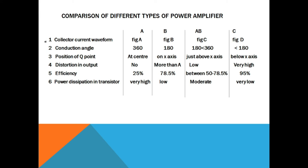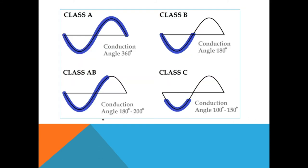The first parameter is the collector current waveform. In case of class A power amplifier, the conduction angle is 360 degrees — the Q-point is adjusted at the middle of the DC load line, so we get a complete output waveform for 360 degrees. In case of class B power amplifier, the conduction angle is 180 degrees, and therefore we get the output waveform only for 180 degrees.